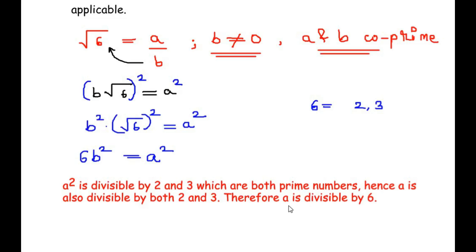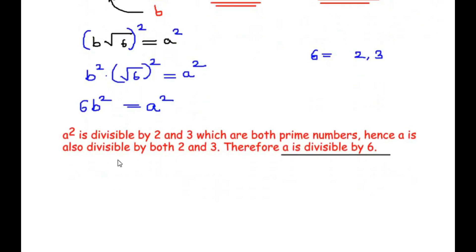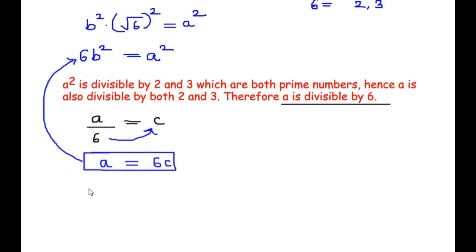Since a is divisible by 6, let us write a over 6 equals some constant c. Now I am going to multiply 6 on the other side, so we get a equals 6c. This value of a equals 6c I am going to substitute in place of a in this equation.